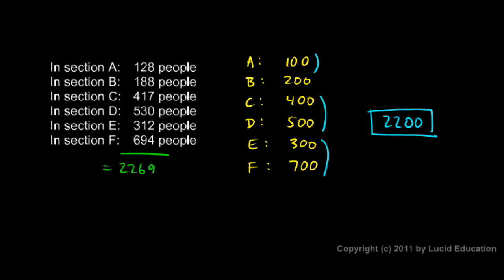Now there's one thing to take note of. Consider this a warning here. This method of getting an estimate by rounding the numbers and then adding works reasonably well and gives pretty good results when some of the numbers get rounded up and some of them get rounded down, as we had happen here. You see the 128 got rounded down to 100, and the 188 got rounded up to 200. And in every case, the number either got rounded up or rounded down. Some were rounded up and some were rounded down.